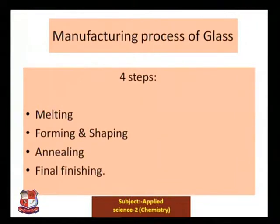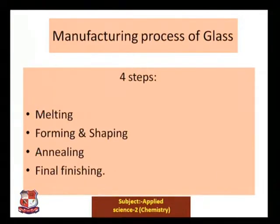Glass manufacturing involves four steps: first is melting, second is forming and shaping, third is annealing, and fourth is final finishing.